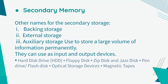Let's talk about the secondary memory. We also call the secondary memory the backing storage, external storage, and auxiliary storage. This is used to store a large volume of information permanently. Unlike RAM, we use secondary memory to store large volumes of information permanently. They can also be used as input and output devices. Some examples of secondary memory are hard disk drive, floppy disk, zip disk and jazz disk, pen drive, flash disk, optical storage devices, and magnetic tapes.